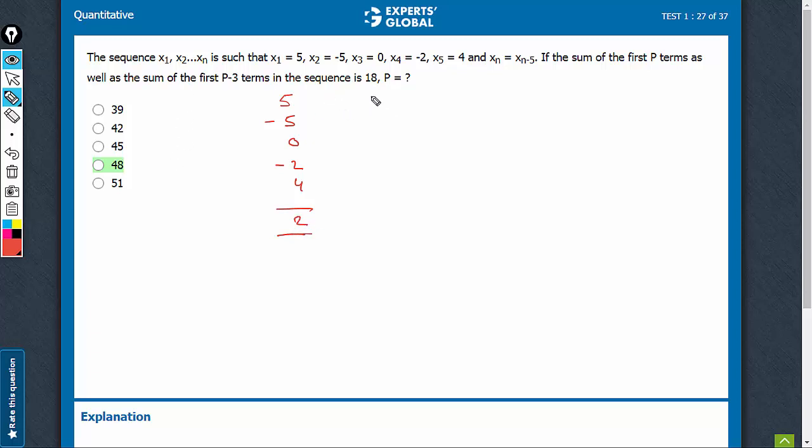And thereafter, it is saying that xn is equal to xn minus 5. So the sixth term is going to be the same as the first term. Basically, these five terms will keep on repeating.